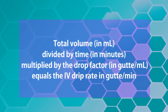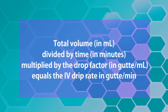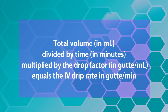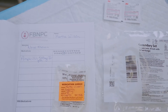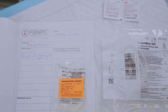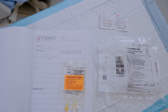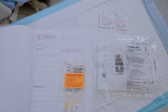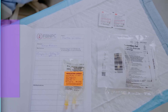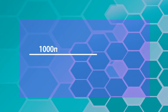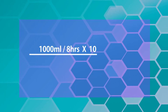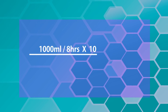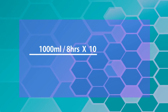This will give you the IV drop rate in guttae per minute, which means the drops per minute. Now let's assume for demonstration that the doctor has given us the order to give 1000 mL of fluid in 8 hours via tubing which has a drop factor of 10.